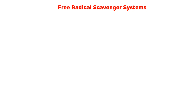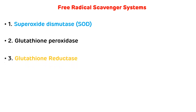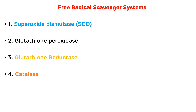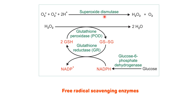Free radical scavenger systems: there are five important substances acting as free radical scavengers. They are: first, superoxide dismutase; second, glutathione peroxidase; third, glutathione reductase; fourth, catalase; and fifth, polyphenols. Among these, the first four are examples of enzymes. This picture shows the reactions involving free radical quenching enzymes.